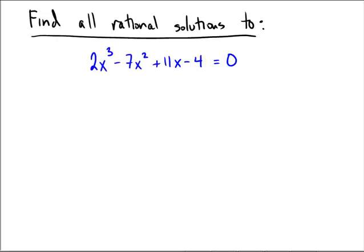Let's find all rational solutions to 2x³ - 7x² + 11x - 4 = 0. Since I need to only find rational solutions, I'm going to use the rational root test.